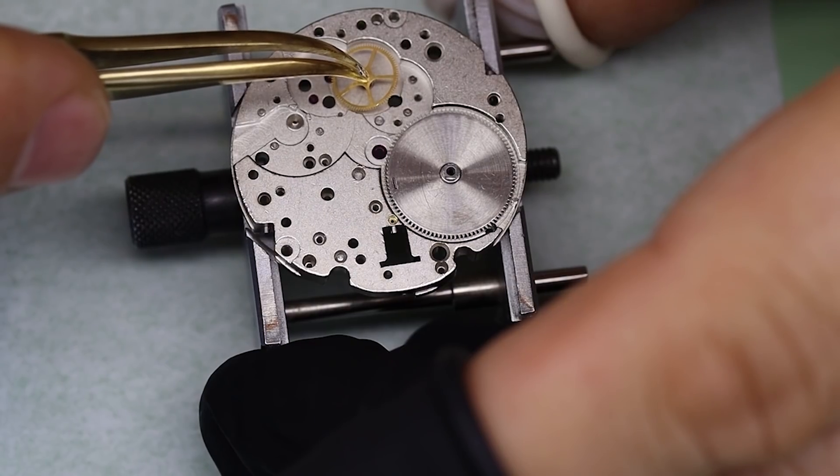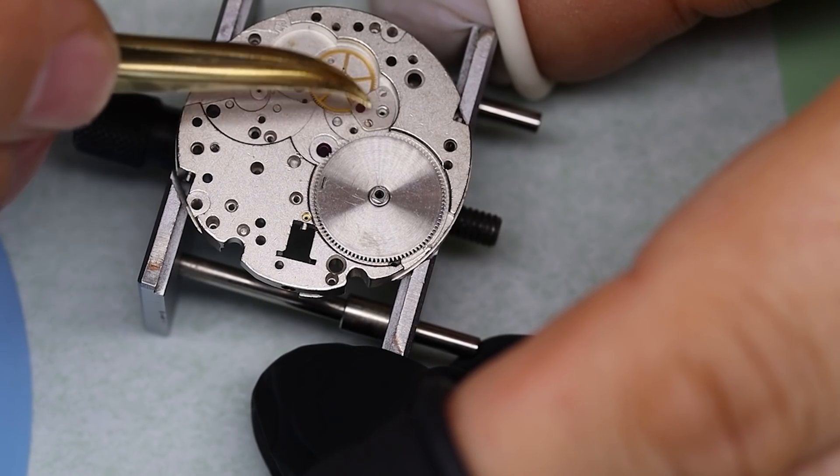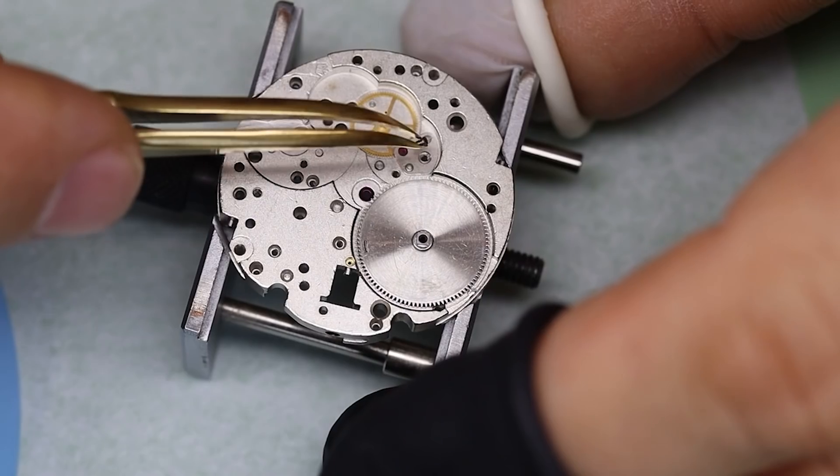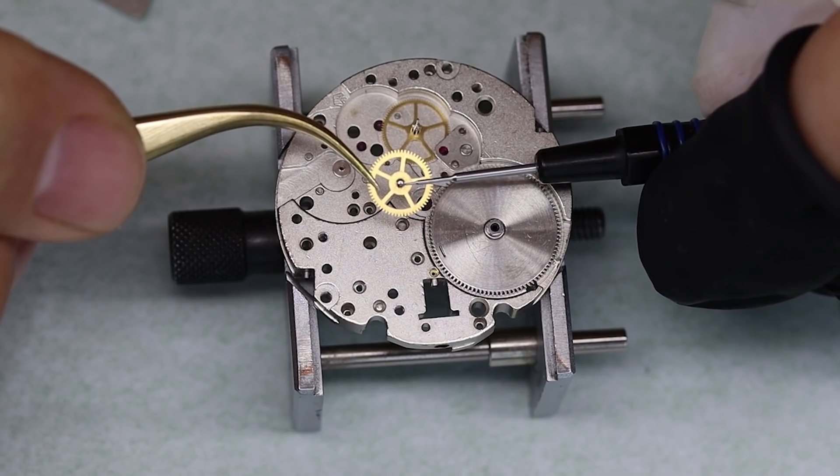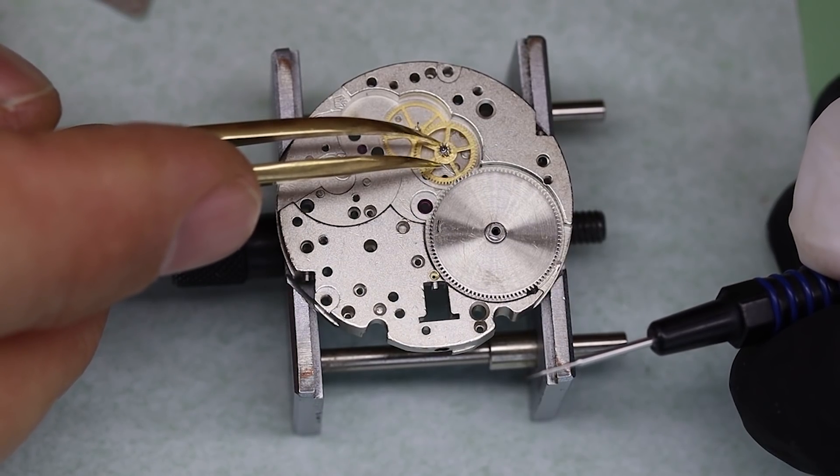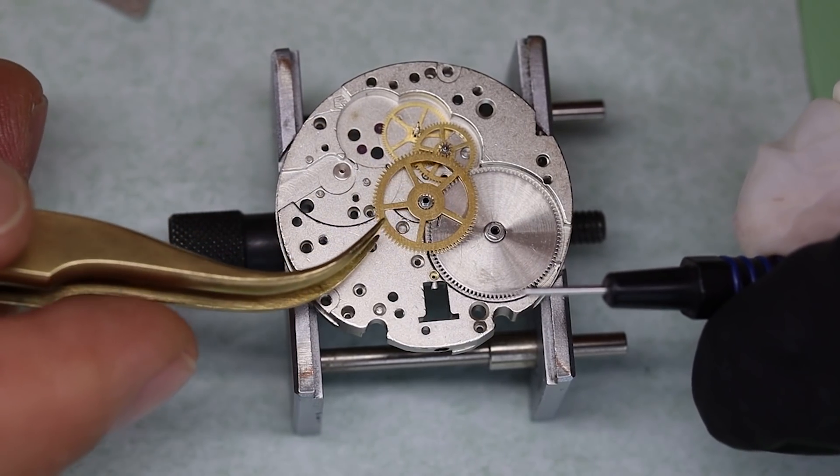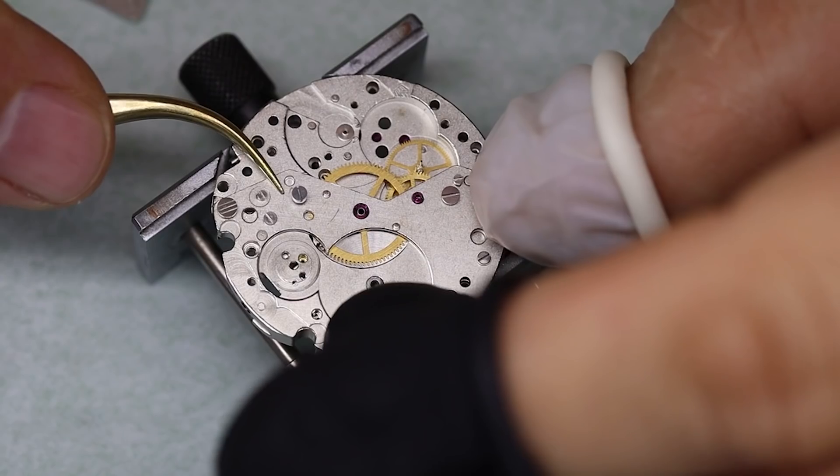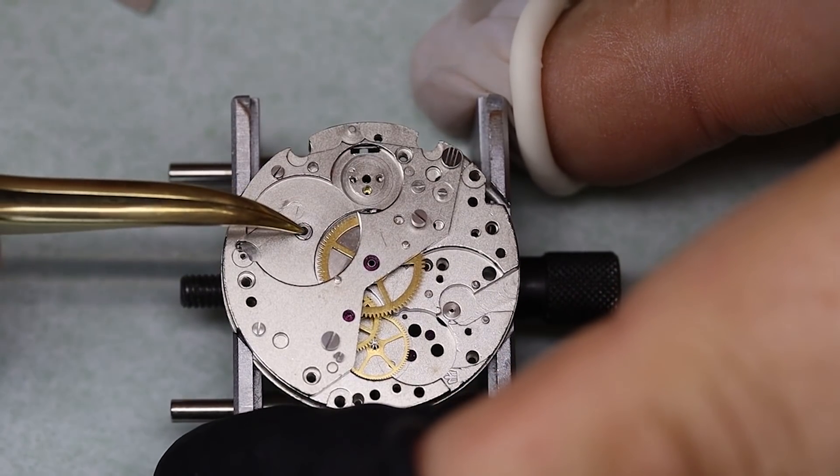Okay, with the balance oscillating properly, we can start assembling the base movement. What I always do is assemble the base movement first, make sure that runs well, and then we can put on any complications that might be. And what we call a complication in a watch is basically anything besides timekeeping. So a date is even a complication, and of course, this one also has a chronograph.